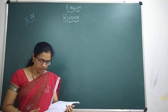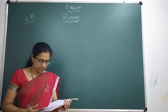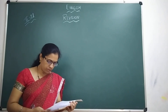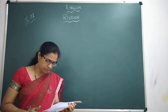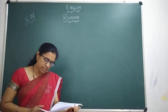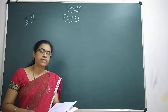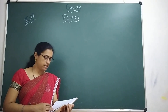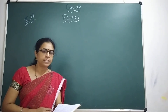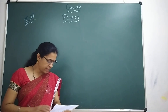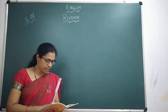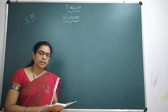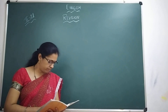Second question: What did Birbal throw on the ground? Birbal threw a lollipop wrapper on the ground. Third question: Did Birbal want the park to be dirty? No, Birbal did not want the park to be dirty. Fourth question: What is the correct place for litter? The correct place for litter is the litter bin.